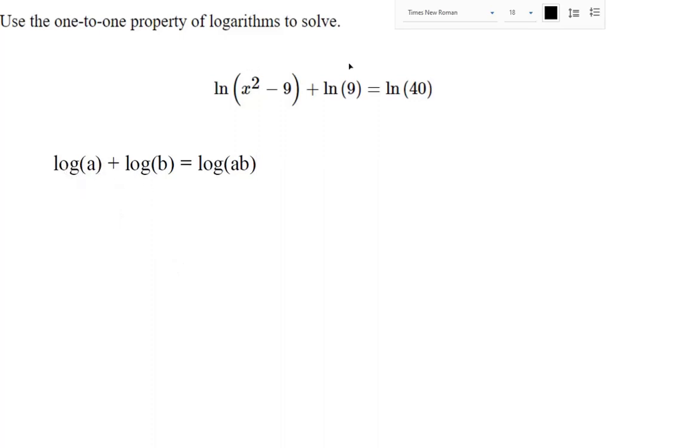This only works if the base of the logarithms are the same. If I didn't write a base, that means log base 10, but this would still work if both were base 3. When they're the same base, you get a log of the arguments multiplied together.